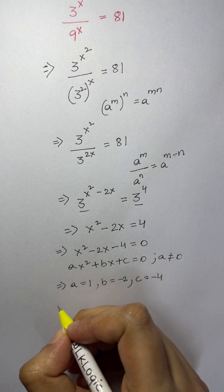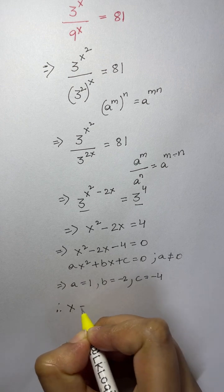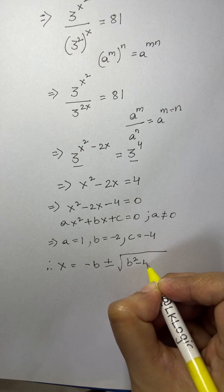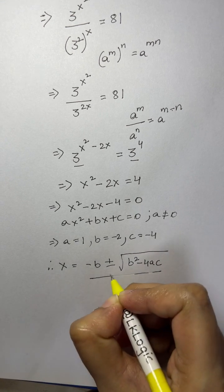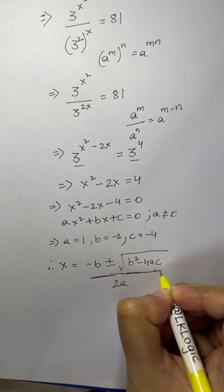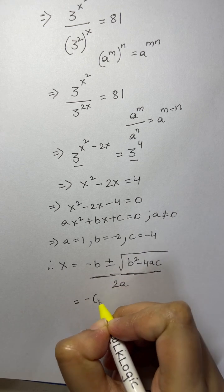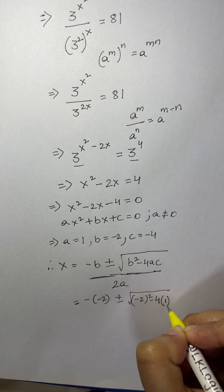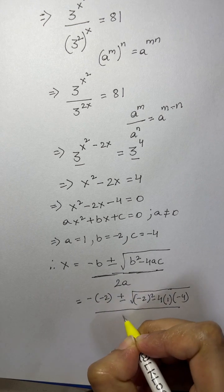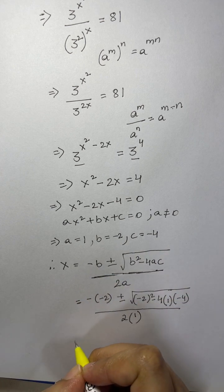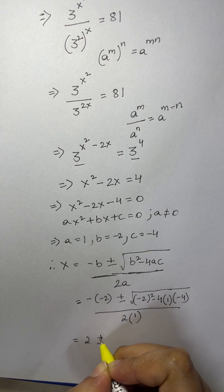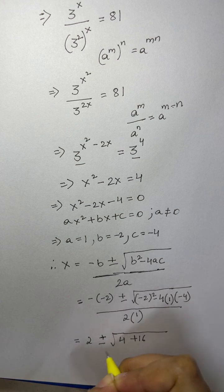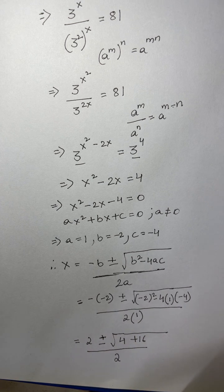We apply the quadratic formula: x equals negative b plus or minus square root of b squared minus 4ac, all over 2a. Substituting the values, we get negative of negative 2 plus or minus square root of negative 2 whole squared minus 4 times 1 times negative 4, over 2 times 1. That simplifies to 2 plus or minus square root of 4 plus 16, over 2, giving us 2 plus or minus square root of 20 over 2.